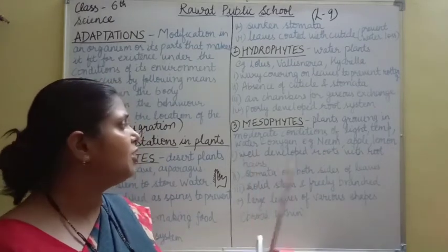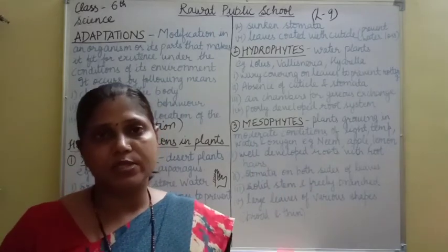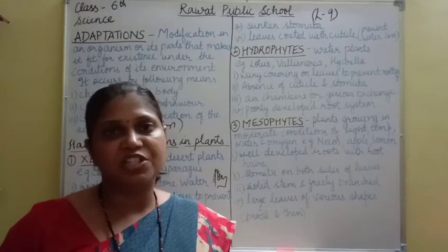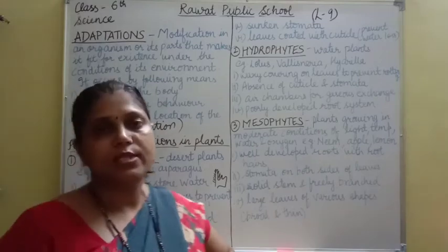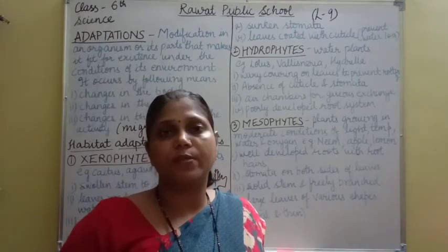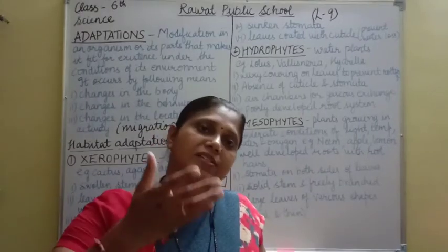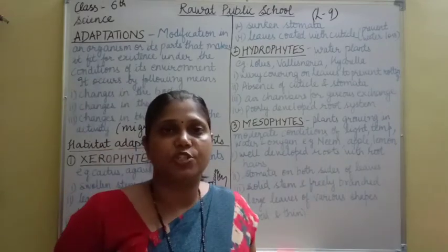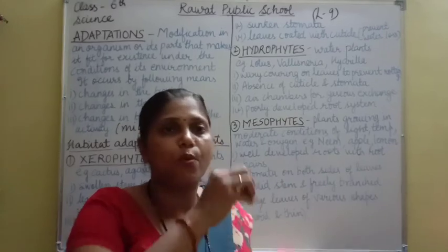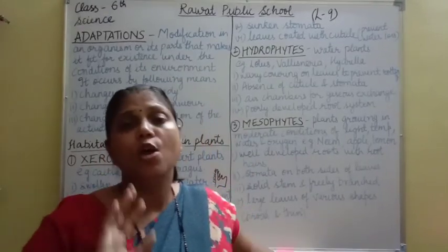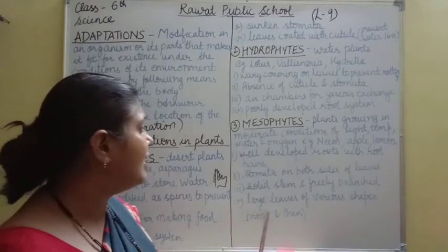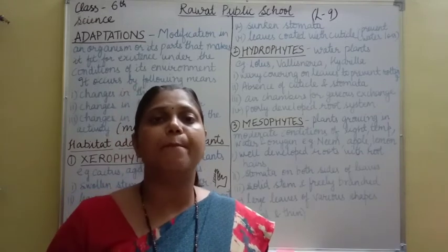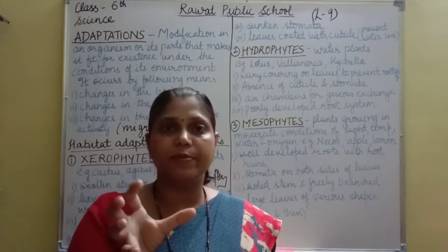What are the adaptations of mesophytes? First, well-developed roots with root hairs — the root system is neither very extensive nor poorly developed. Second, stomata on both sides of leaves, functioning for water loss regulation and gaseous exchange. Third, solid stem that is freely branched — the stems are solid and there are many branches. Fourth, large leaves of various shapes — broad and thin leaves of different shapes for maximum photosynthesis.